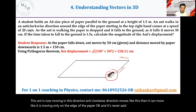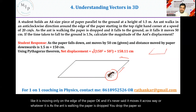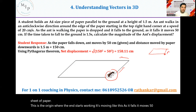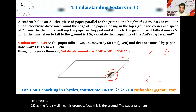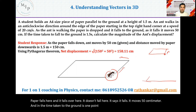As the ant is walking, the paper is dropped. This is the sheet of paper; this is the origin where the ant starts walking. As it falls, it moves 50 centimeters. Now this is the ground. The paper falls here — it does not fall directly below; it moves 50 centimeters forward. The time taken to reach the ground is 1.5 seconds. Calculate the magnitude of the ant's displacement.